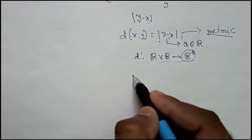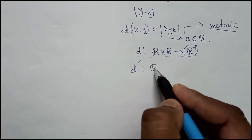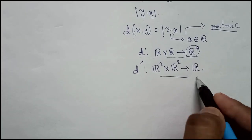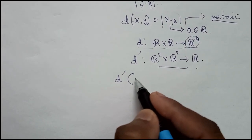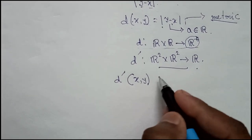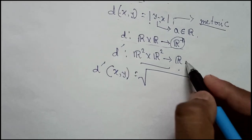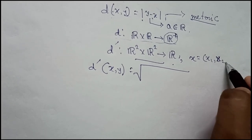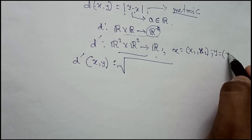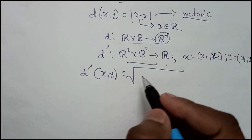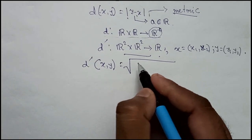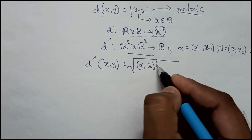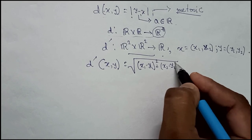Now let me come forward to another function d' and let it be from R^2 cross R^2 to R and how this function is being constructed. D' of (x, y), let me give the introduction of x and y. x is (x1, x2) and y is (y1, y2) so this one is nothing but normal Euclidean distance that we talk about: square root of (x1 - y1)^2 plus (x2 - y2)^2.